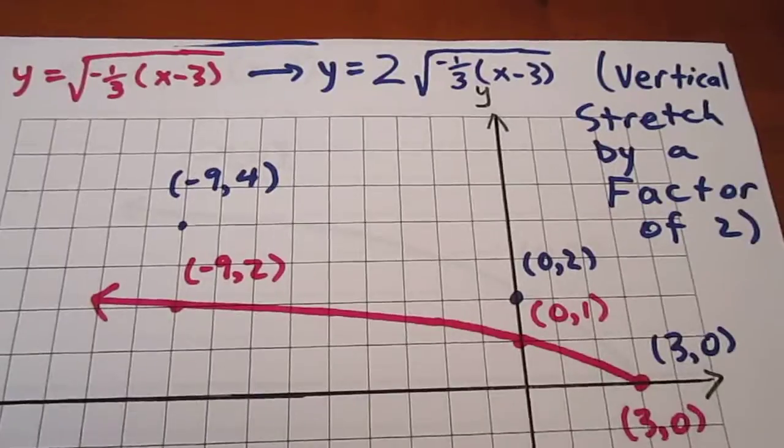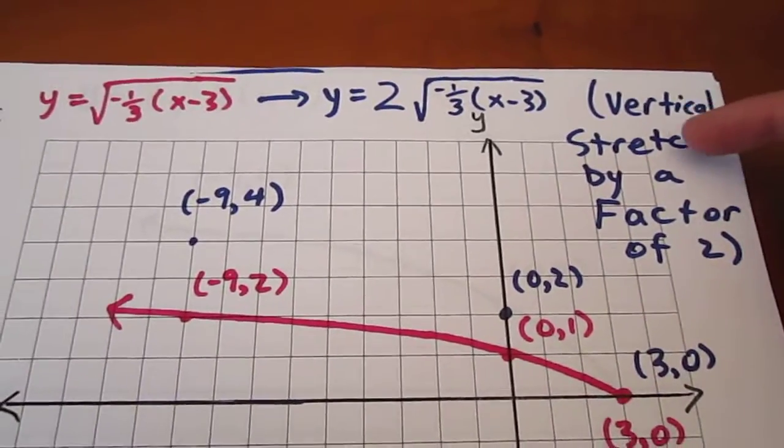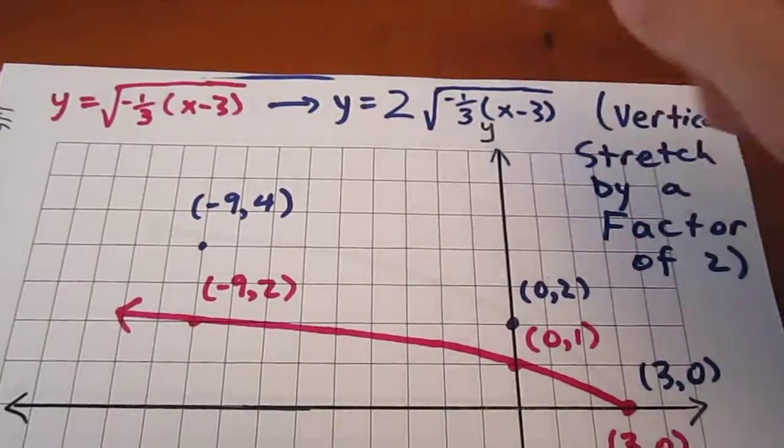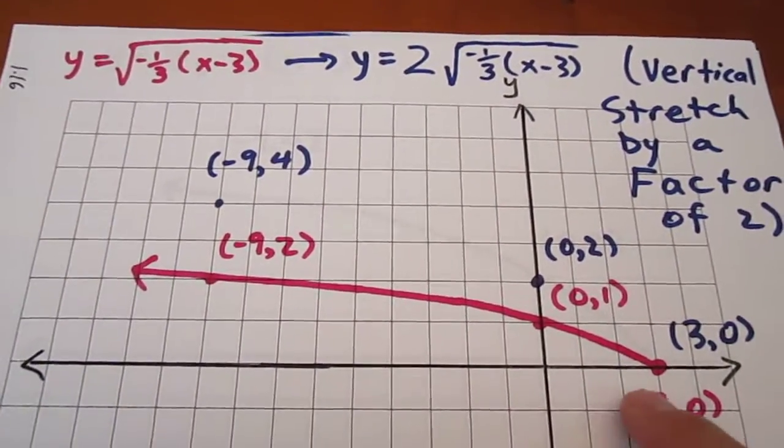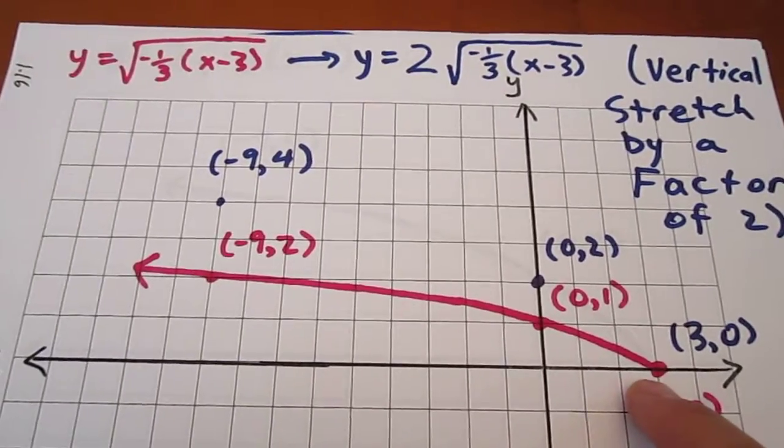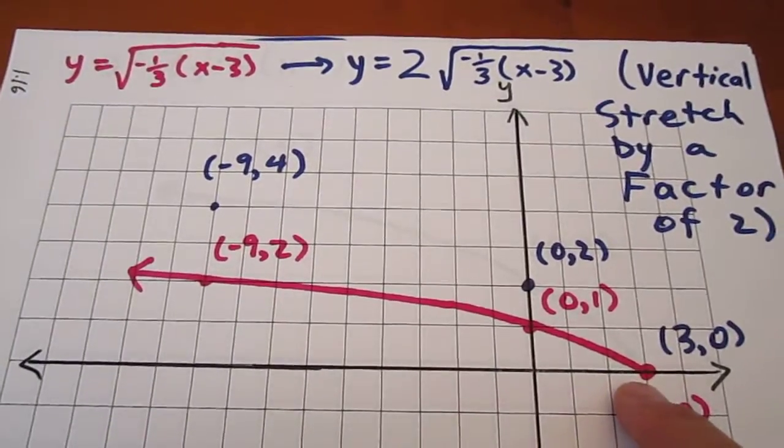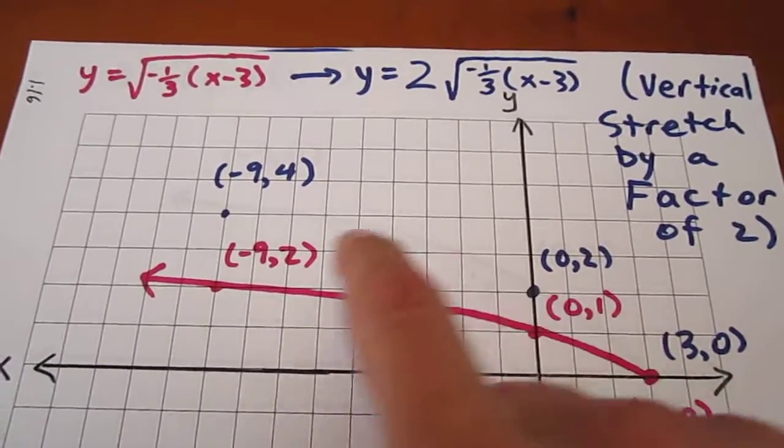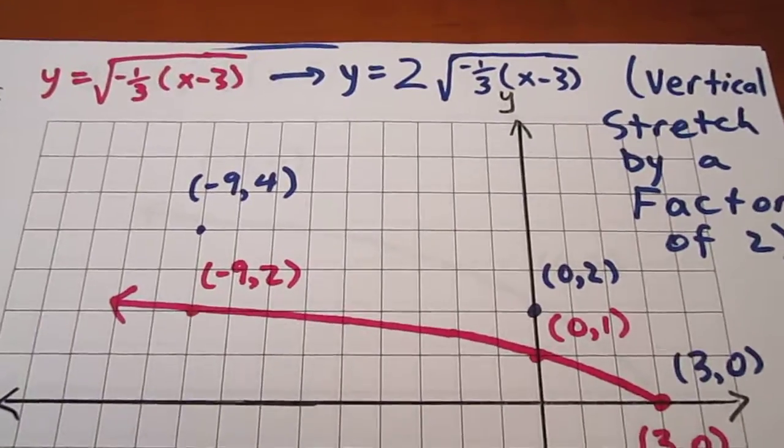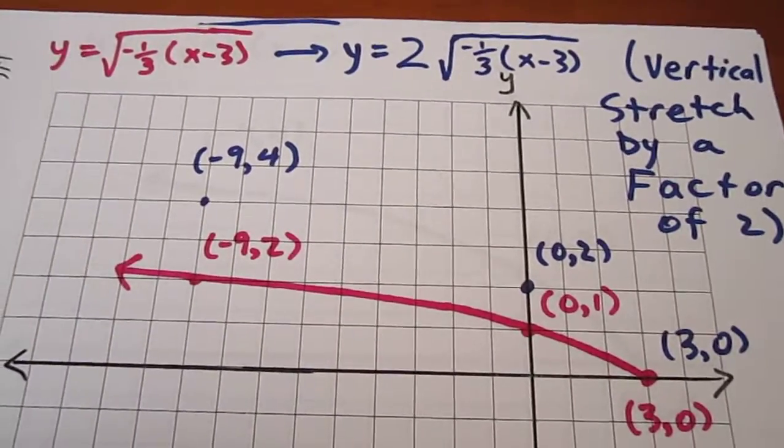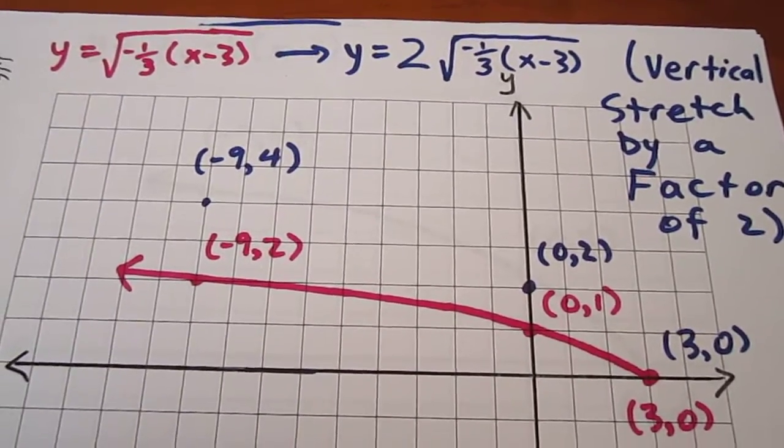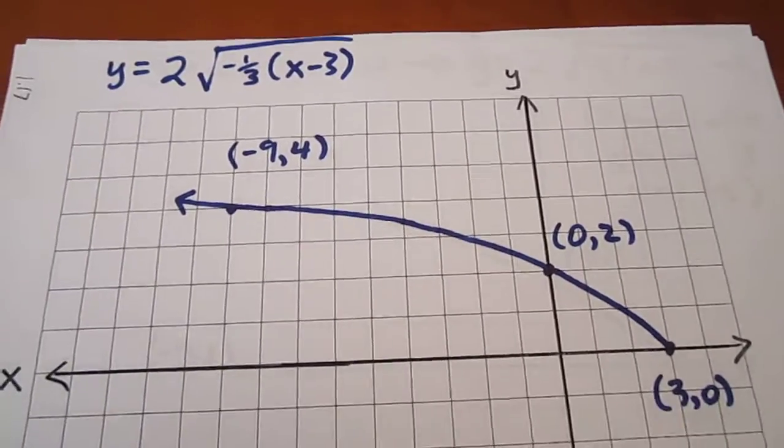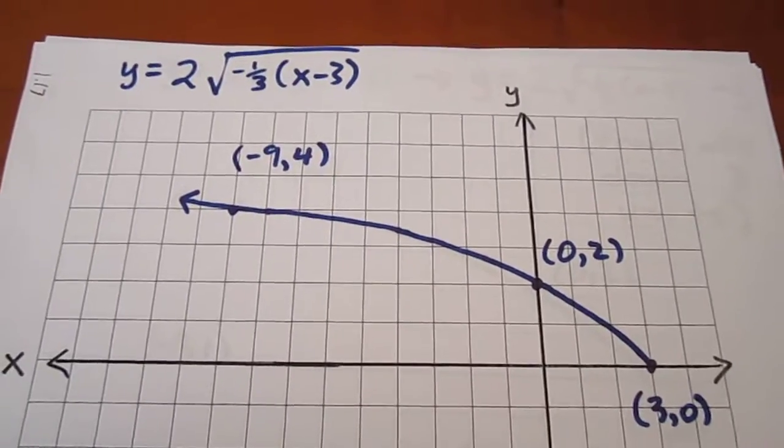Now we're 3 transformations into our 5-transformation process. What we now want to do is consider the pink curve, but also consider the vertical stretch by a factor of 2, which is indicated by that a value of 2. What that is is a process of multiplying each y-coordinate by 2. 3, 0 stays at 3, 0. 0, 1 becomes 0, 2. Negative 9, 2 becomes negative 9, 4. These are vertical transformations, not horizontal, so the x is unaffected, the x-coordinates. We get this blue curve. Now this is us 4 transformations into our 5-transformation process.